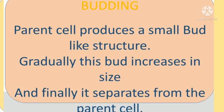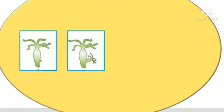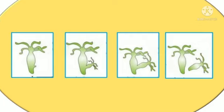Budding: the parent cell produces a small bud-like structure. Gradually, this bud increases in size and finally it separates from the parent cell. For example, hydra.